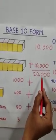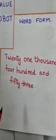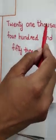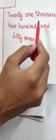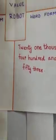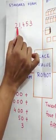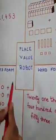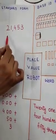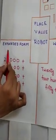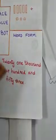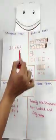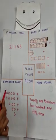The last meal of the day was the word form. It was twenty-one thousand, four hundred fifty-three. Now you can see that the single number 21,453, we can write it in 4 different ways: in standard form, in base 10 form, in expanded form, and in word form. All together, this becomes Place Value Robot. Robot was very happy, and his stomach was full.